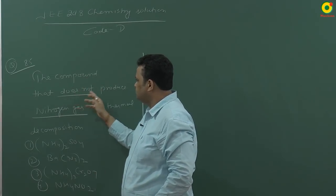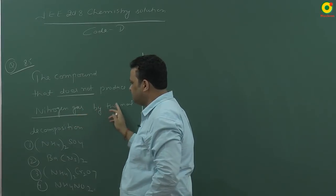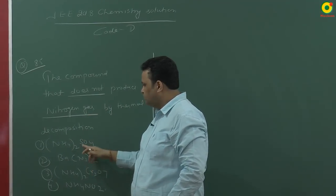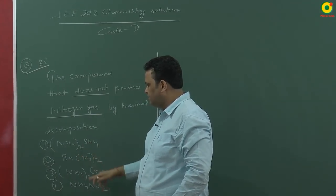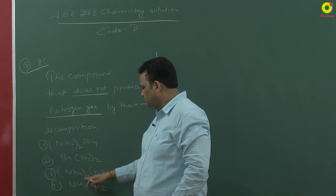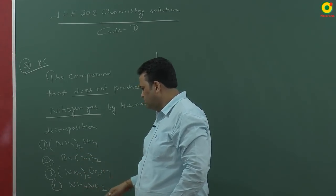The compound that does not produce nitrogen gas by thermal decomposition. Four options are given: ammonium sulphate, barium azide, ammonium dichromate, and ammonium nitrite.